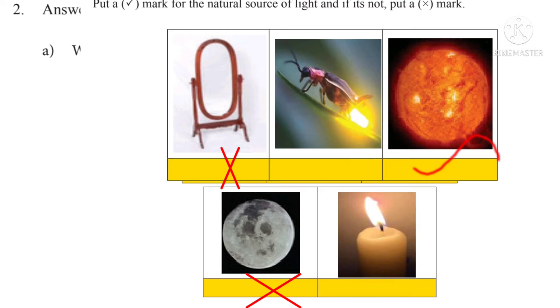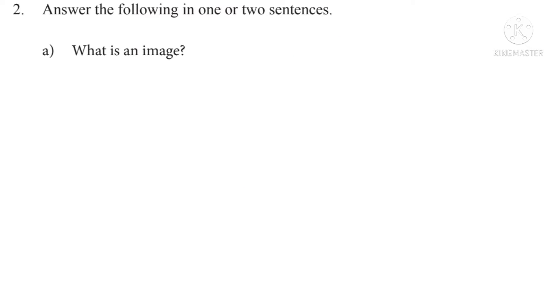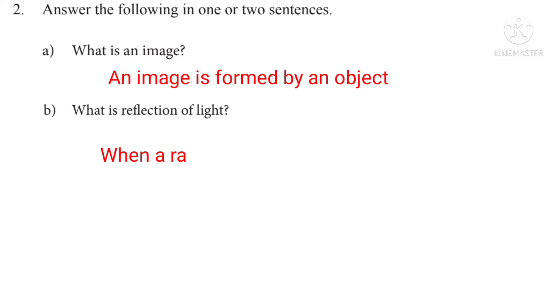Second question, answer the following in one or two sentences. What is an image? An image is formed by the reflection of light rays from an object. What is reflection of light? Reflection of light is when a ray of light falls on a smooth and polished surface, light returns back in the same medium.